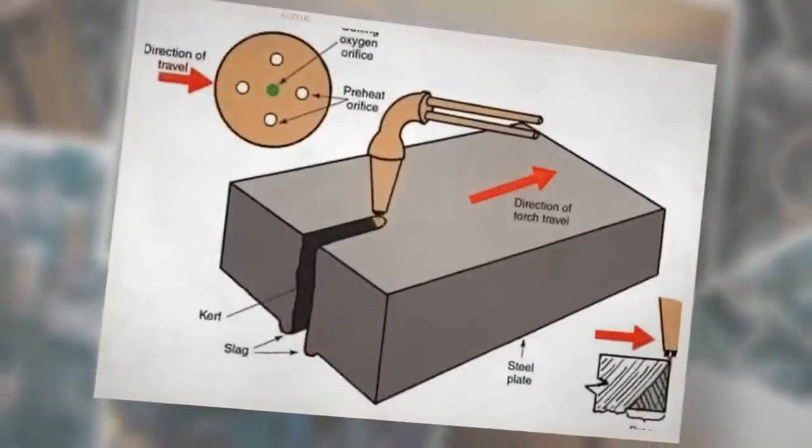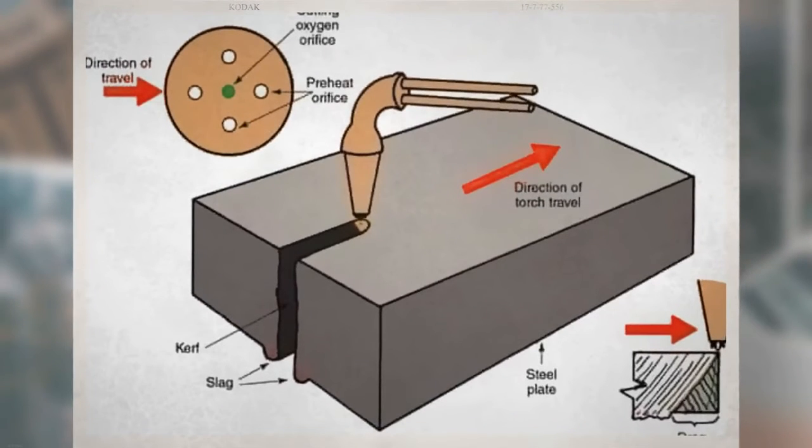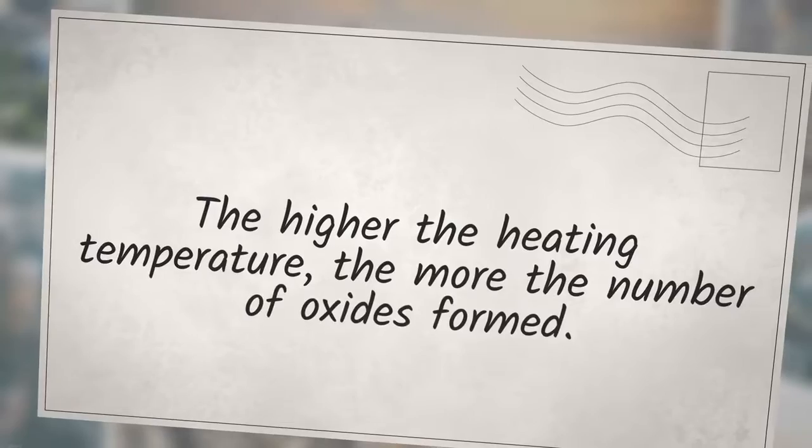This process works best for materials where they can easily form metal oxides such as iron. Iron forms iron oxide when it is heated in the presence of oxygen. The higher the heating temperature, the more the number of oxides formed.